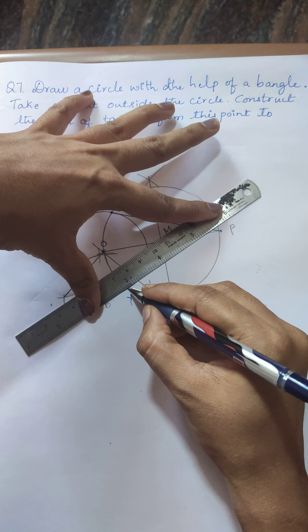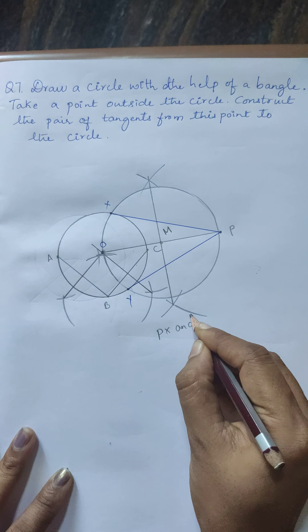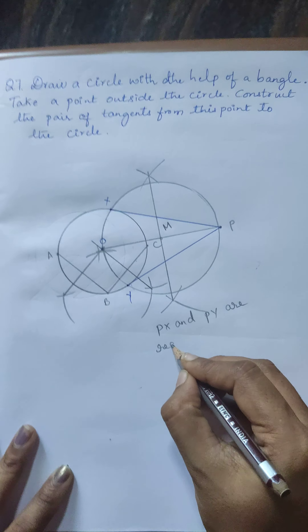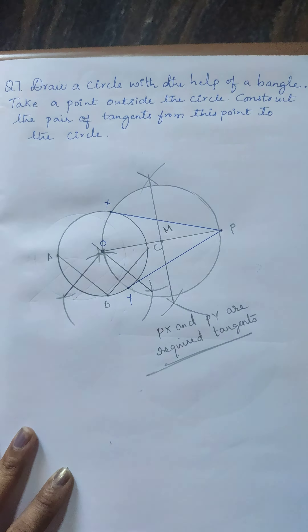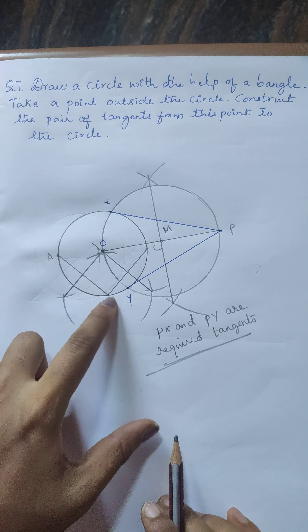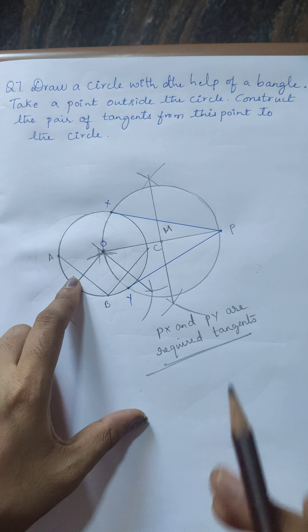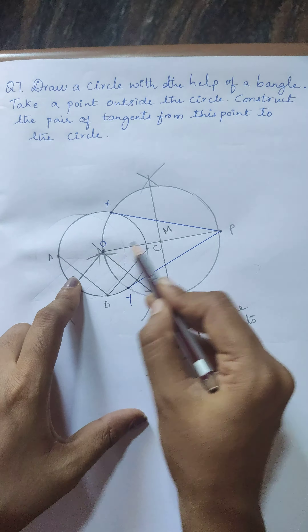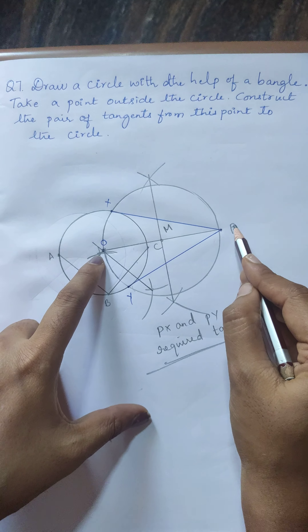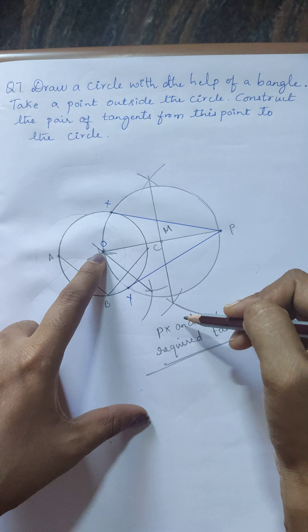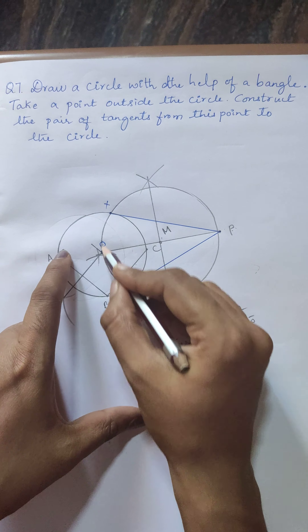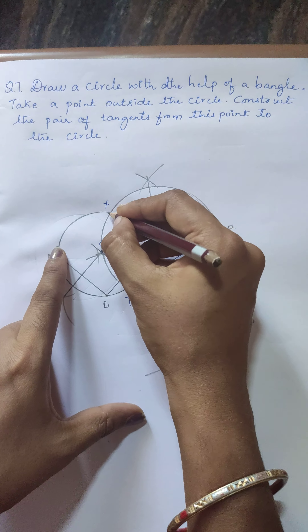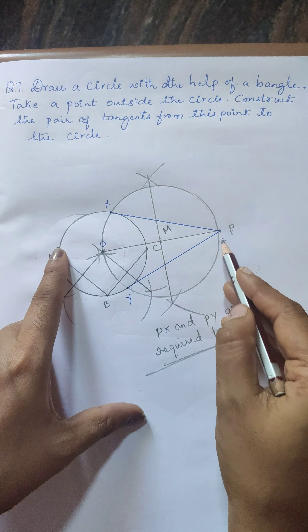PX and PY are the required tangents. To summarize: first draw the circle using the bangle, find the center using perpendicular bisectors as done in 9th standard, then take any point P outside the circle, join OP, draw the perpendicular bisector of OP to get midpoint M, take OM as radius to draw another circle — where the two circles meet gives points X and Y — and join PX and PY as the pair of tangents.